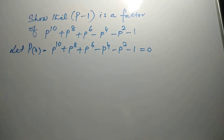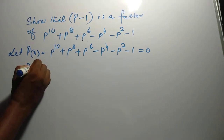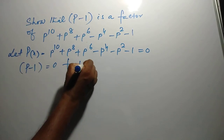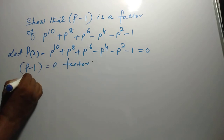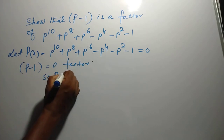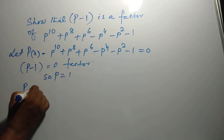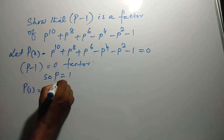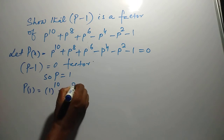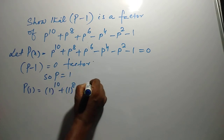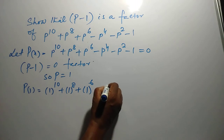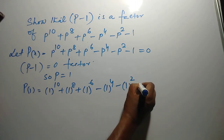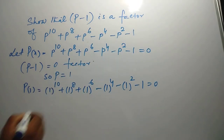As p minus 1 is a factor, p minus 1 equals 0, so p equals 1. Then p(1) equals 1 to the power 10, plus 1 to the power 8, plus 1 to the power 6, minus 1 to the power 4, minus 1 to the power 2, minus 1, which equals 0.